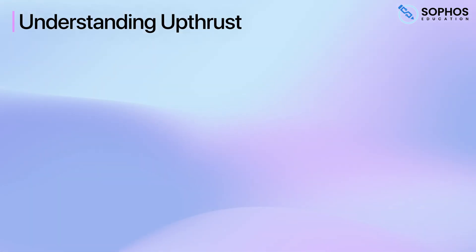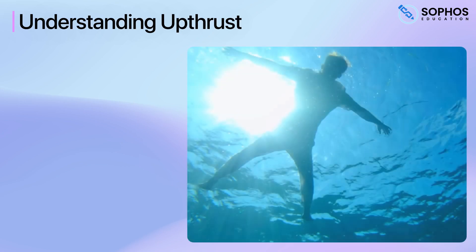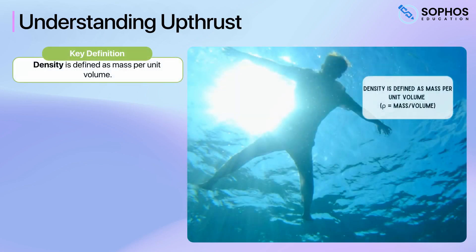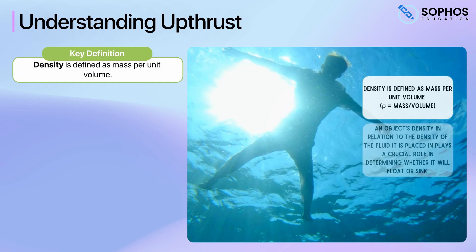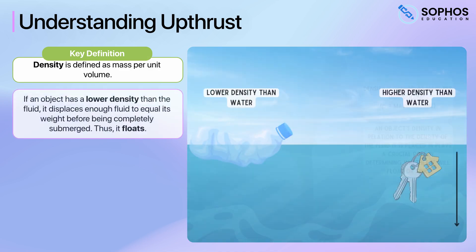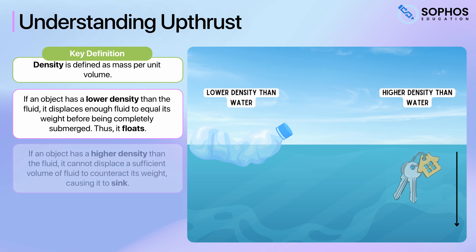With this in mind, another way of thinking about floating is in terms of density. Density is defined as mass per unit volume. An object's density in relation to the density of the fluid it is placed in plays a crucial role in determining whether it will float or sink. If an object has a lower density than the fluid, it displaces enough fluid to equal its weight before being completely submerged, and thus it floats. If an object has a higher density than the fluid, it cannot displace a sufficient volume of fluid to counteract its weight, causing it to sink.